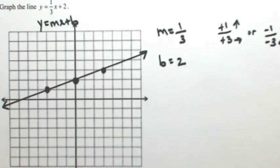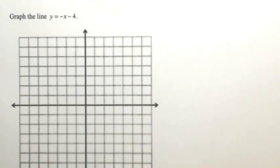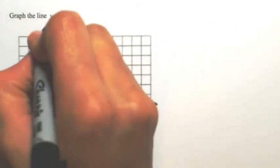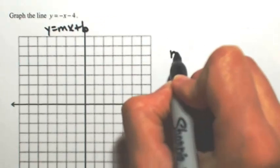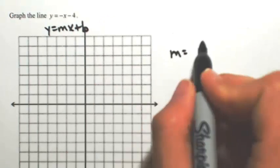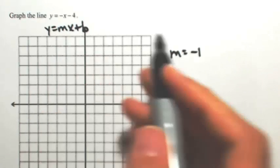Let's look at another one. Let's say that y is equal to negative x minus four. Again, writing this in the slope-intercept form, you can identify what the m and the b is. So m is going to equal whatever is in front of x, which is negative one, and b is going to be whatever is after x, which is negative four.